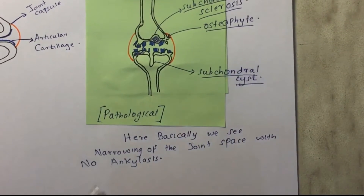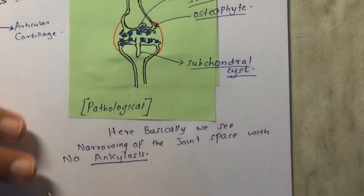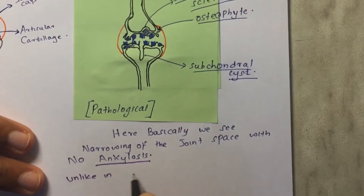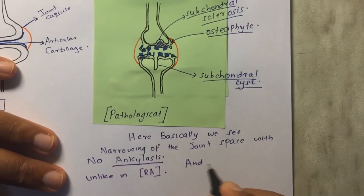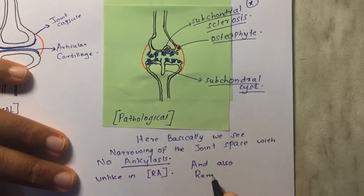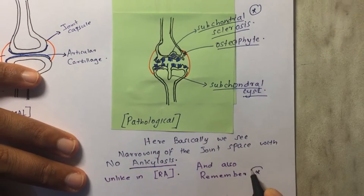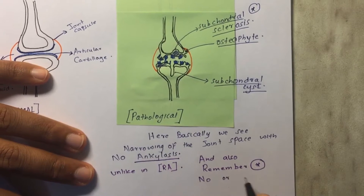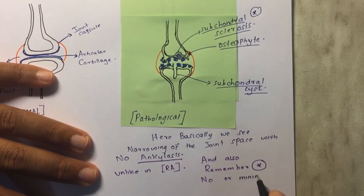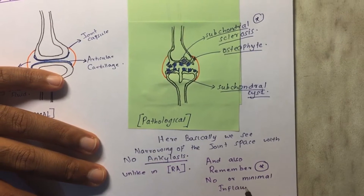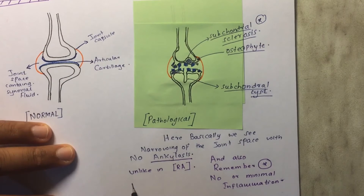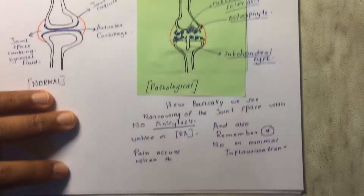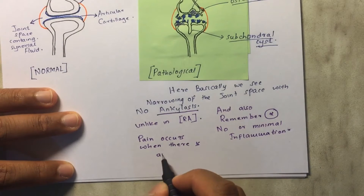Ankylosis — the joining of bones — is seen in rheumatoid arthritis, not in osteoarthritis. Keep in mind that osteoarthritis is not an inflammatory process; there is almost no or minimal inflammatory activity. Pain in these patients occurs due to overuse of the joint.